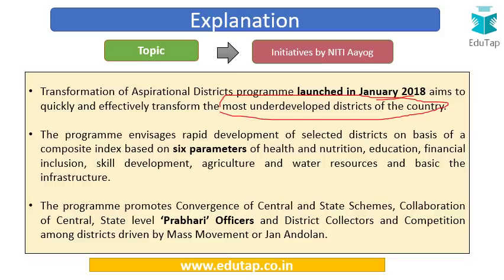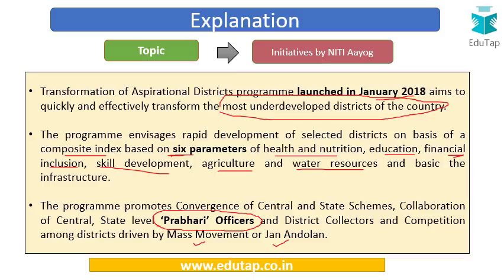Districts are selected on the basis of a composite index built on six parameters: health and nutrition, education, financial inclusion, skill development, agriculture and water resources, and basic infrastructure. The program promotes convergence of central and state schemes and collaboration of central and state-level Prabhari officers along with district collectors. Competition among districts is driven by a mass movement — Jan Andolan.